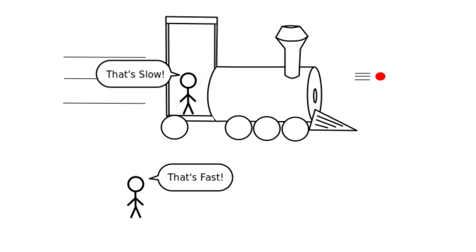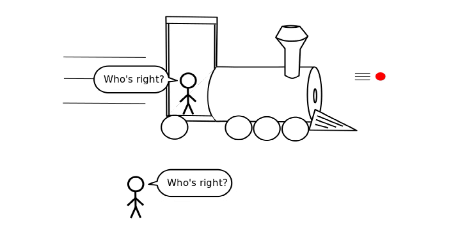Situations like this are very important in physics because they raise the question, which observer is correct? The short answer to this question is that they both are correct. We just have to be able to explain why their observations are different, hence the study of relativity.